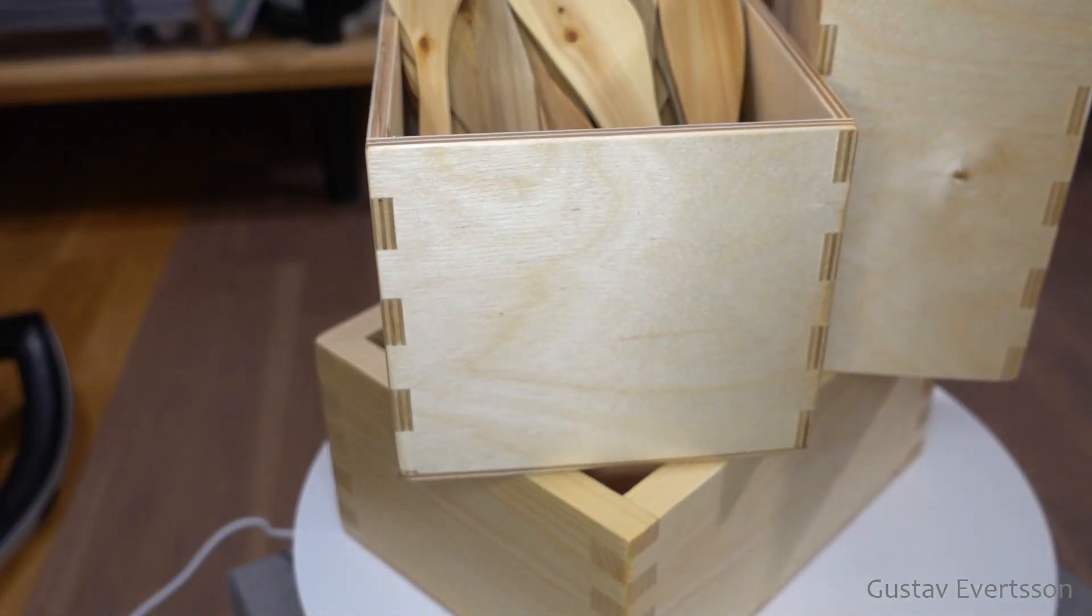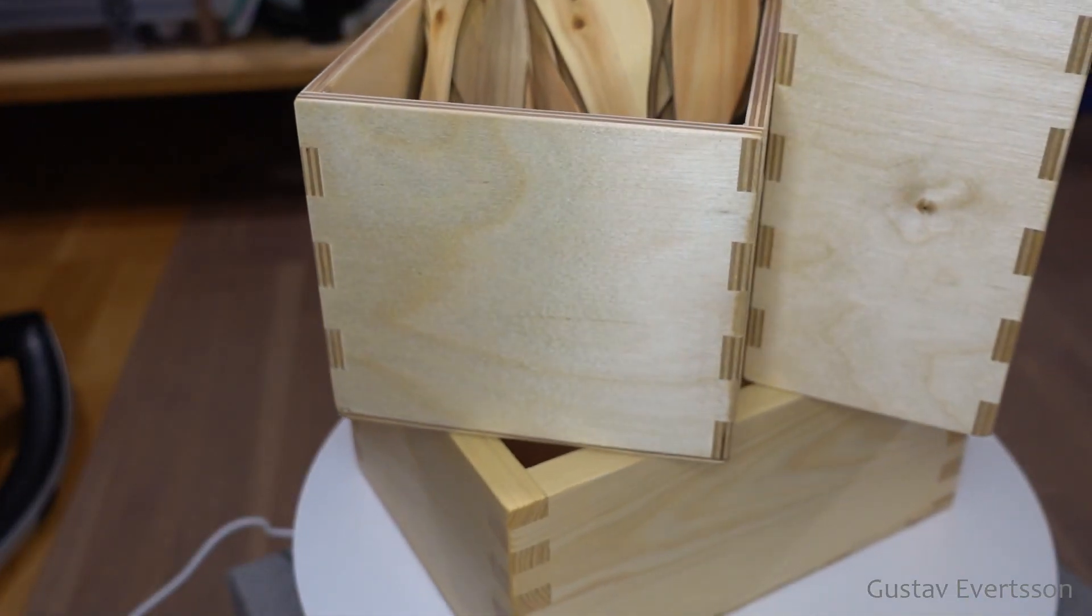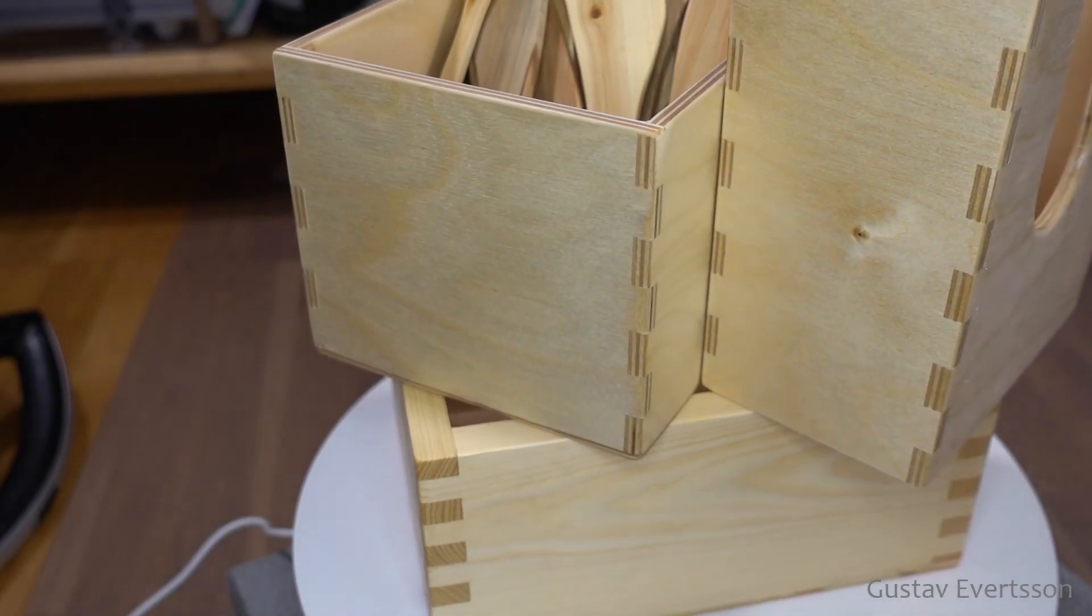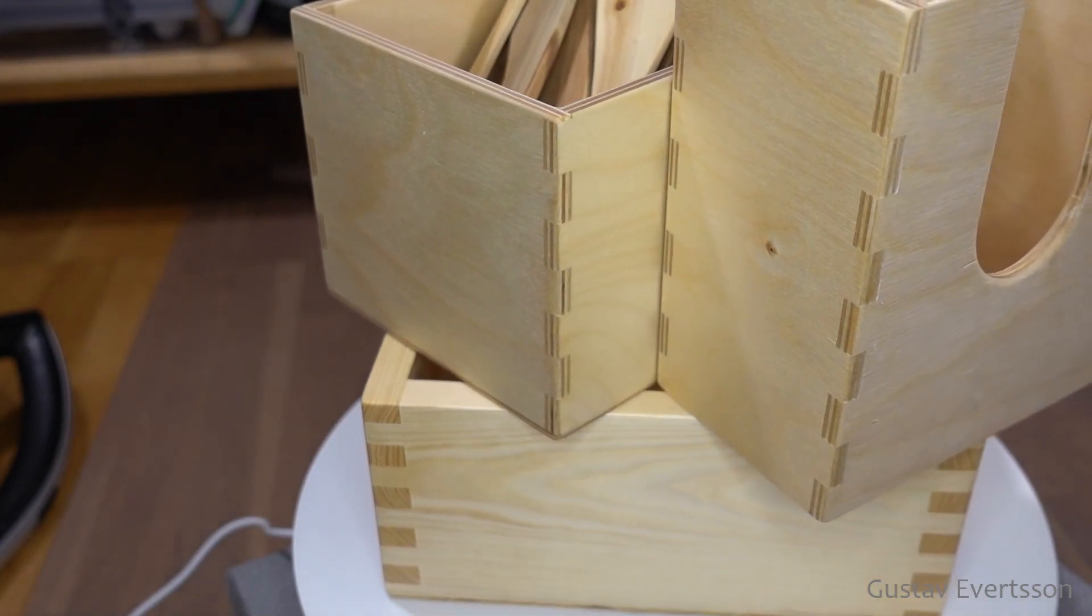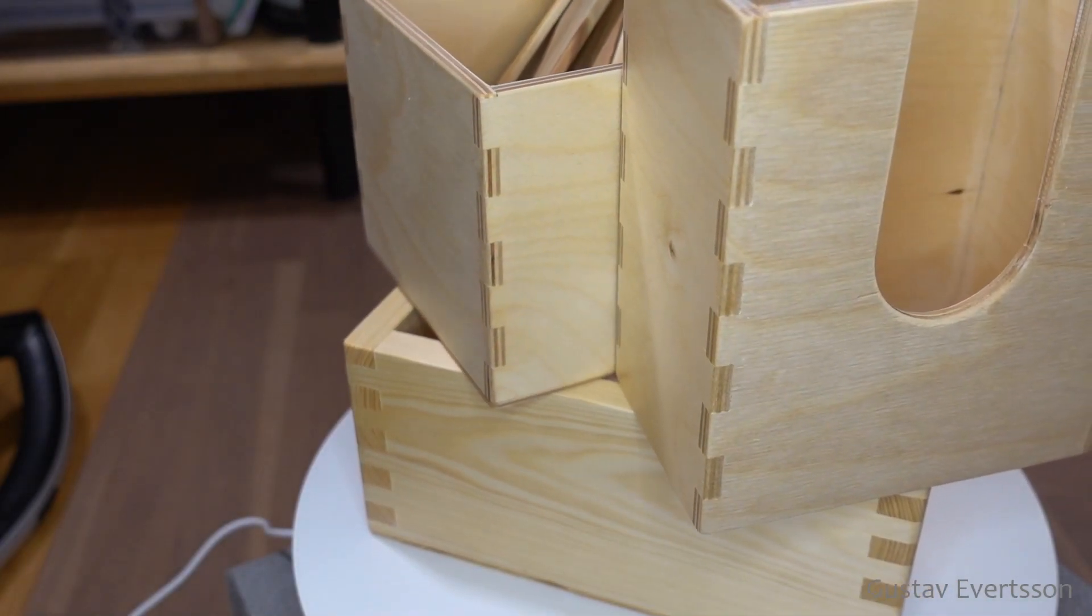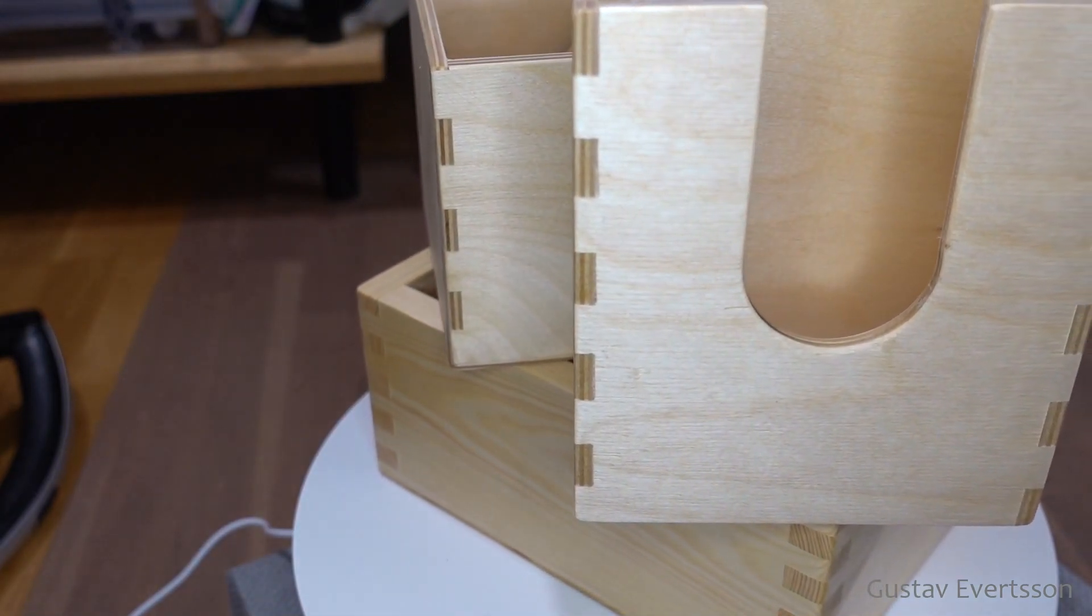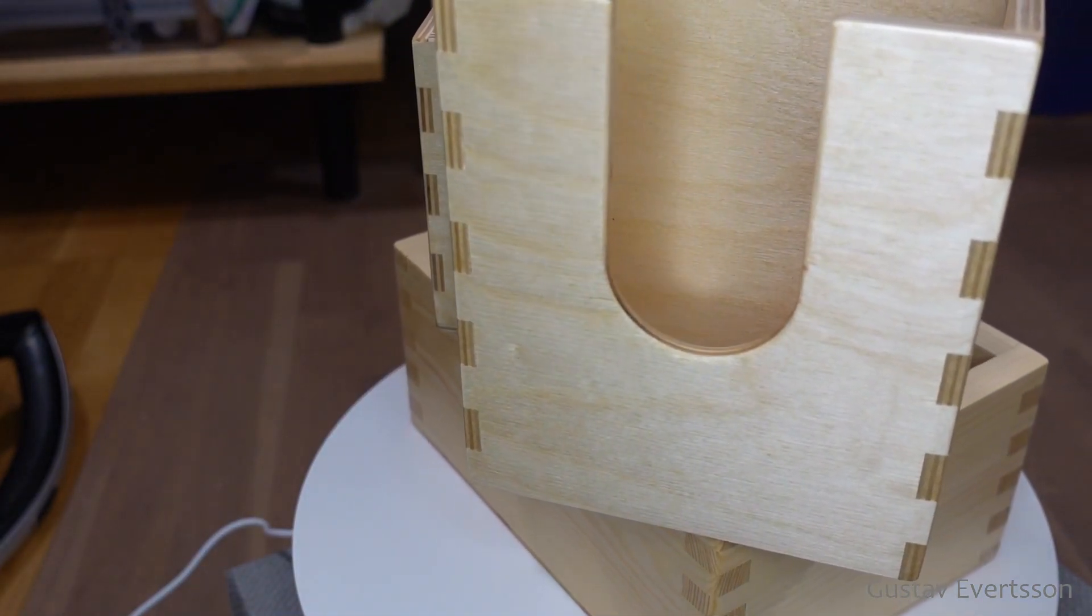Box joints are joints that lock like this. They are strong, don't require any fastening like nails or screws. I think they look nice too, so they are part of the design and not something you need to hide.